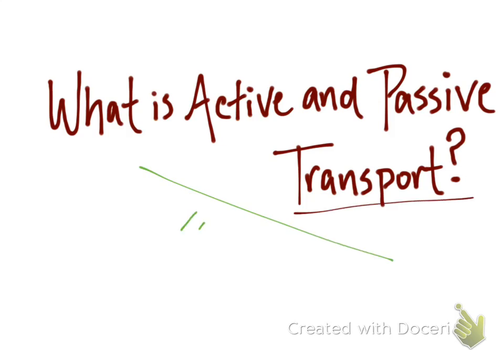So all of this is relating back to diffusion and the movement of particles in order for equilibrium. However, active and passive transport is more about the movement of particles, the two different types of moving particles.